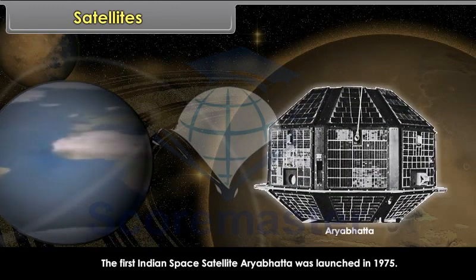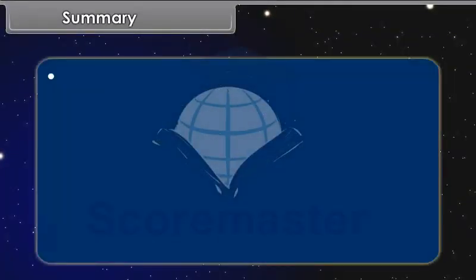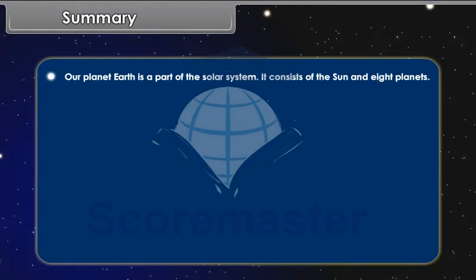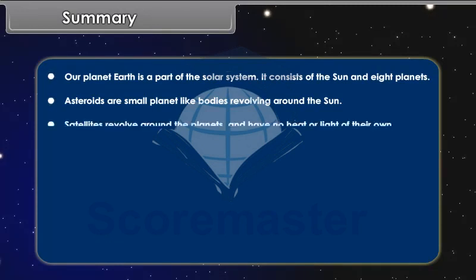Summary. Our planet Earth is a part of the solar system. It consists of the Sun and 8 planets. Asteroids are small planet-like bodies revolving around the Sun. Satellites revolve around the planets and have no heat or light of their own.